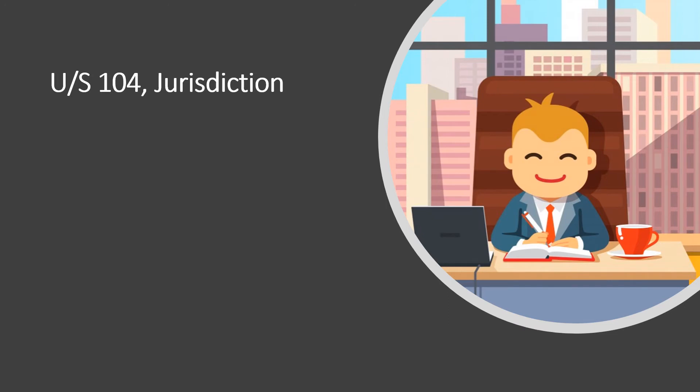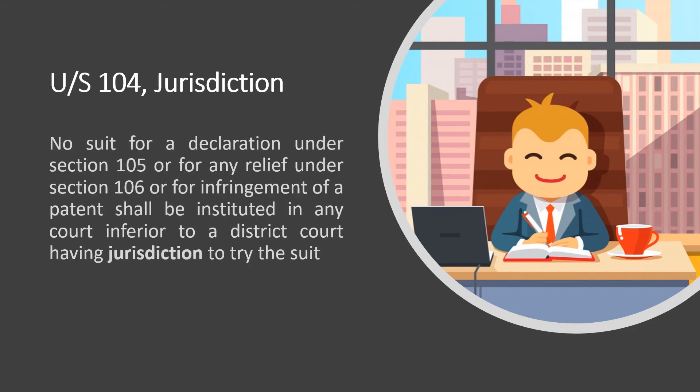Section 104 on jurisdiction states that no suit for a declaration under Section 105, or for any relief under Section 106, or for infringement of a patent shall be instituted in any court inferior to a district court having jurisdiction to try the suit. This indicates that a suit for infringement of a patent shall be filed in the court that has jurisdiction to try such a case, and such court shall not be inferior to a district court.